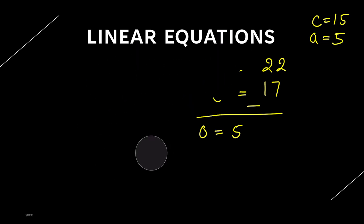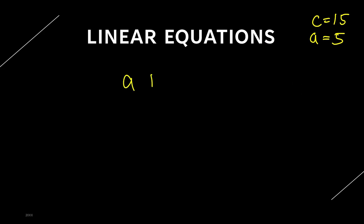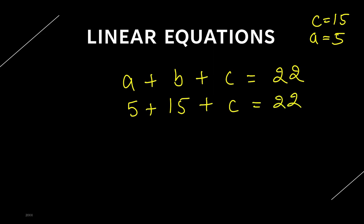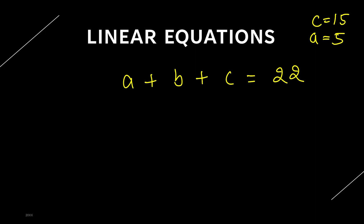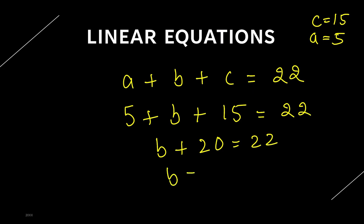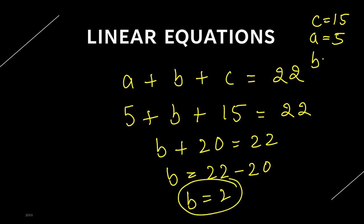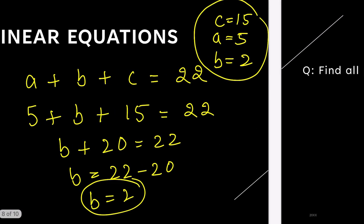We have found A equals 5 and C equals 15. Now for B: A plus B plus C equals 22, and A plus C equals 5 plus 15 equals 20. So B plus 20 equals 22, giving B equals 2. These are the three numbers we are looking for: A equals 5, B equals 2, C equals 15. This is how you solve a 3-variable equation.